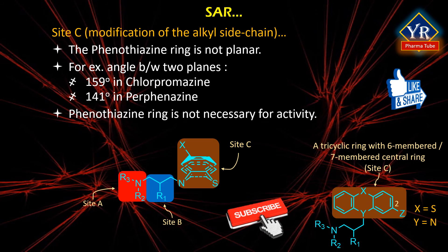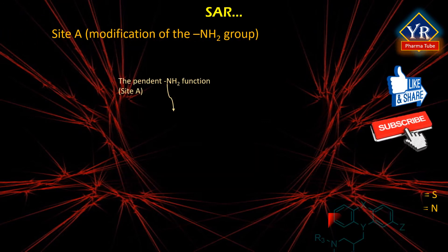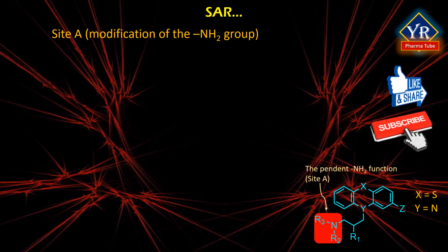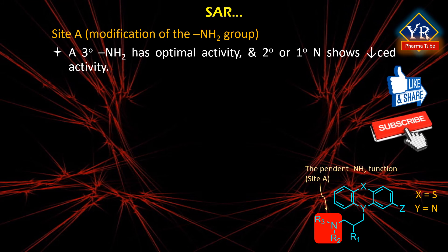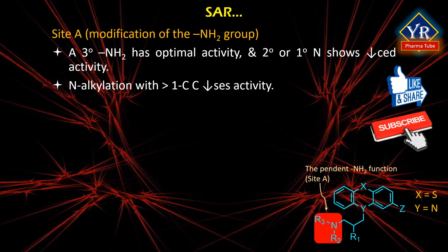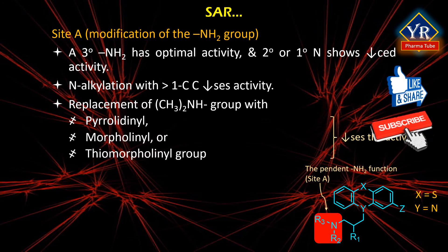Thus, the phenothiazine ring is not necessary for neuroleptic activity; other planar tricyclic systems like thioxanthenes are also found to be active. Substituents at the second position (X) in the phenyl ring improve activity. Electron-withdrawing substituents such as halogens, methoxy, acetyl, and trifluoromethyl increase activity, while substituents at positions 1, 3, and 4 decrease activity. Regarding modifications at site A (the nature of the amino group): tertiary nitrogen shows maximum potency while secondary or primary nitrogen shows reduced or abolished activity. N-alkylation with more than one carbon decreases activity.